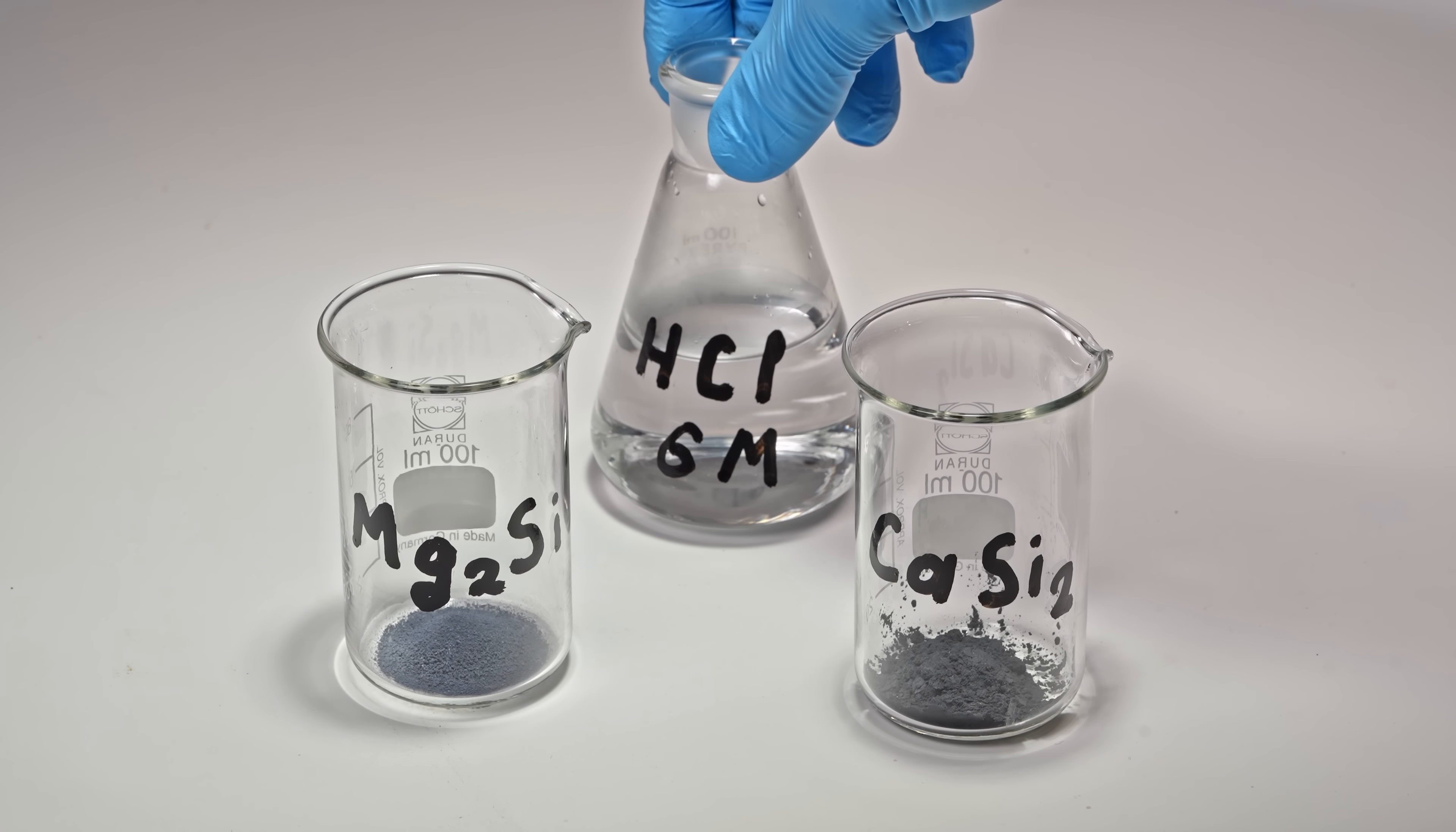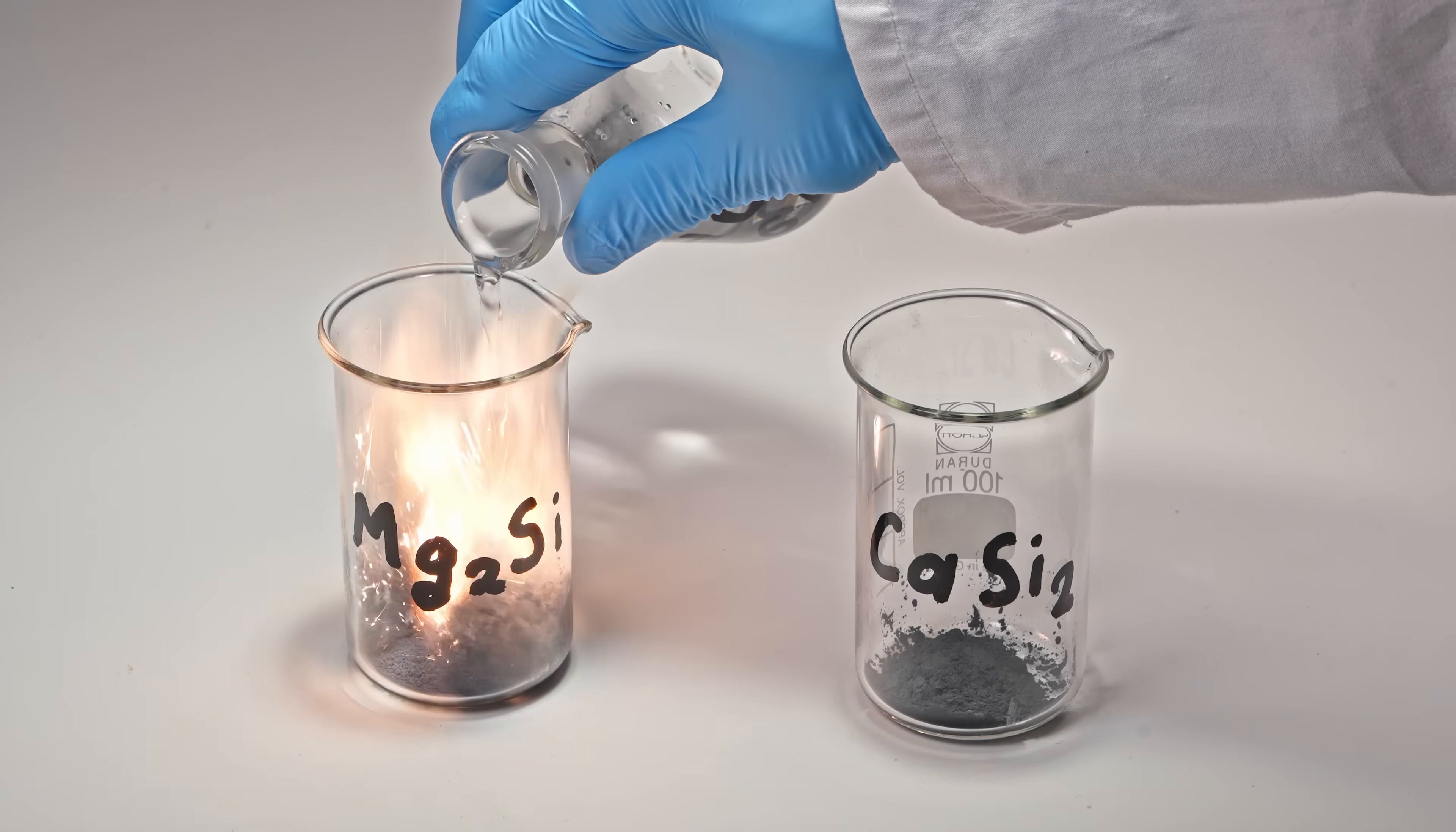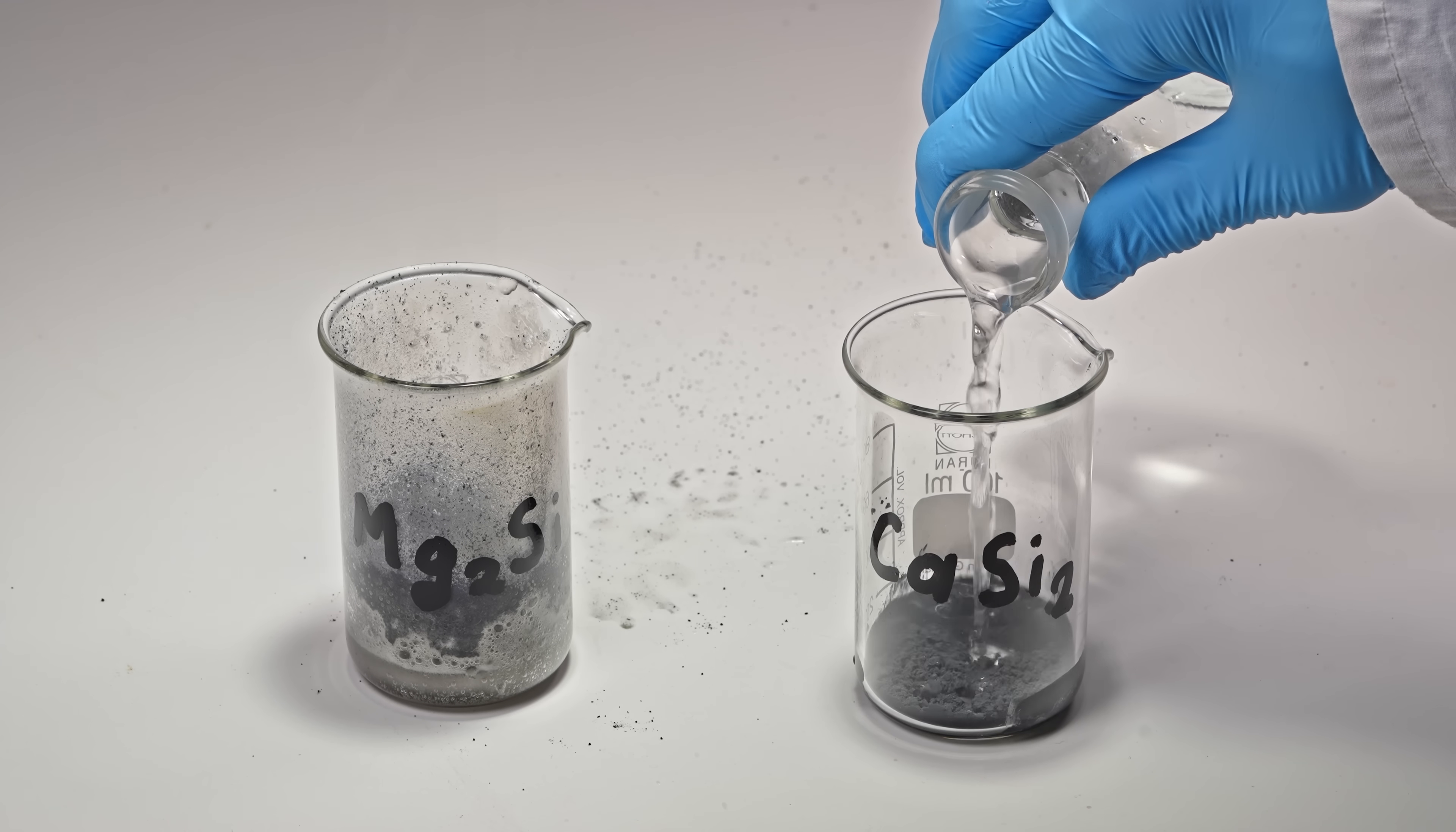At first, these substances look like they should act the same, but they don't. If I add hydrochloric acid to magnesium silicide, it makes a quick flash of flammable silane gas. But if I add the same acid to calcium disilicide, there is no flash.